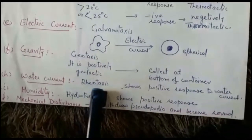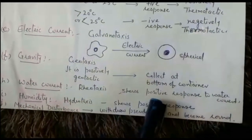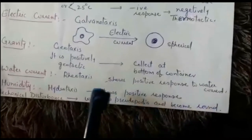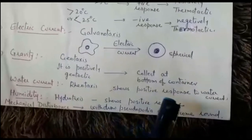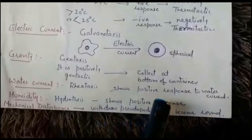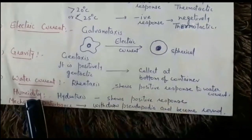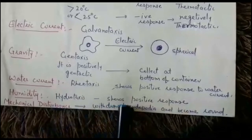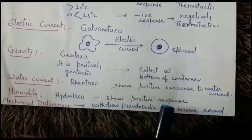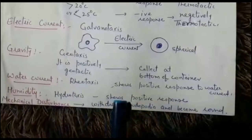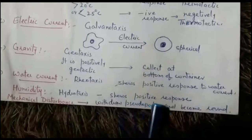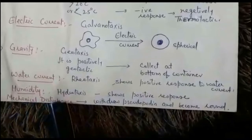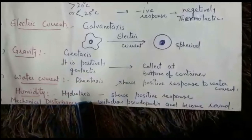Its response to water current is known as rheotaxis. It shows positive response to water current — in whichever direction the water current flows, amoeba will start creeping or floating in that direction. Regarding response to humidity, known as hydrotaxis, amoeba lives in water so it shows positive response to water. When water dries up, it forms a cyst around itself to protect itself.